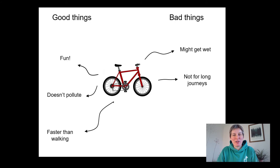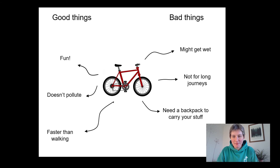The bad things about a bike: you might get wet when it rains. Personally I'm quite happy to put my coat on and get a little bit wet — as long as you take your coat off when you get there, you should be dry underneath — but that might put some people off. It's not so good for long journeys, though as you get fitter you'll be able to go further. And you'll need a backpack to carry your stuff — that just means being a little bit organised so you don't have bags hanging off your handlebars.